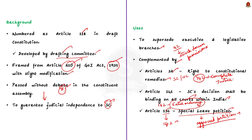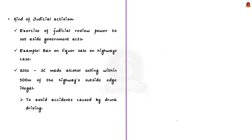The enforcement of the Supreme Court's order is a kind of judicial activism. Judicial activism is the exercise of the power of judicial review to set aside government acts. That is, the Supreme Court has frequently overridden laws passed by Parliament in order to provide complete justice.